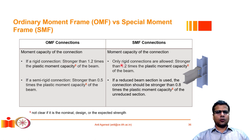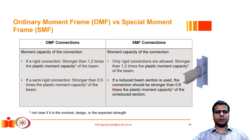IS 800 requires columns to have moment capacity at least 20% greater than beams for both OMF and SMRF using rigid connections. However, OMFs also allow semi-rigid connections, in which case the connection need only be stronger than 0.5 times the plastic moment capacity of the beam. For SMFs, only rigid connections are permitted and the connection must be at least 1.2 times the plastic moment capacity of the beam. The connection strength is governed by the weld strength and the load transfer mechanism from beam to column.